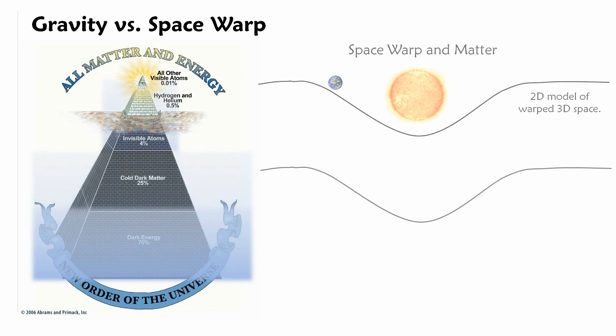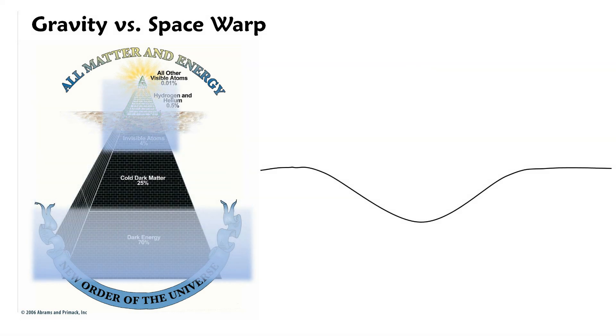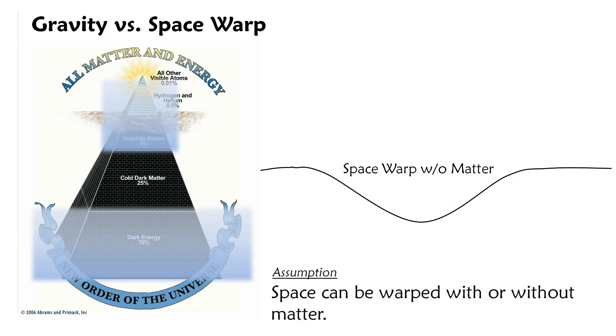Now, forgetting about dark matter for a moment and plainly looking at the effect of dark matter on large scales, we see a similar space warp, but without matter. At this point, why shouldn't we assume that there is something invisible and undetectable causing this space warp?